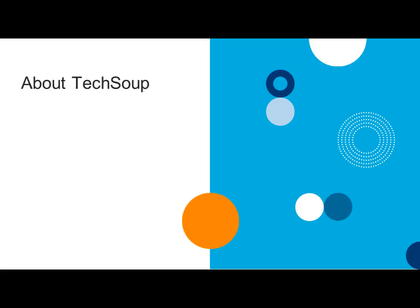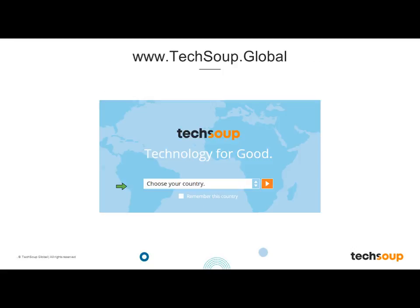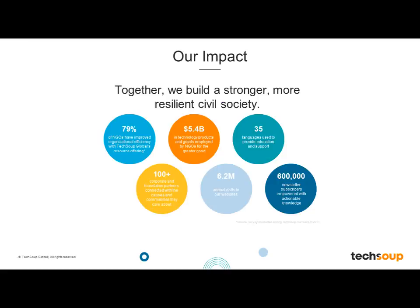I'm going to quickly introduce TechSoup in case you're not familiar with us. We are serving countries all around the world, building a dynamic bridge that helps connect civil society organizations and social change agents to the tools and resources they need. We have been serving organizations since 1987, and have helped facilitate $5.4 billion in technology products and grants to NGOs, libraries, churches, and foundations around the world.